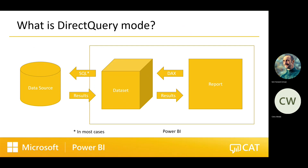Let's start with the basics: what is Direct Query mode? There are two fundamental ways of working with data in Power BI. There is import mode, where you copy the data from your source into your dataset — when your report runs, Power BI gets the data from its own in-memory column store database engine. In Direct Query mode there is still a dataset, but the dataset doesn't store any data. Your report still generates DAX queries against the dataset, but then the dataset translates those DAX queries into a query language that your data source understands. Your data source returns the data, the dataset glues the results back together, and the report shows the data you need.